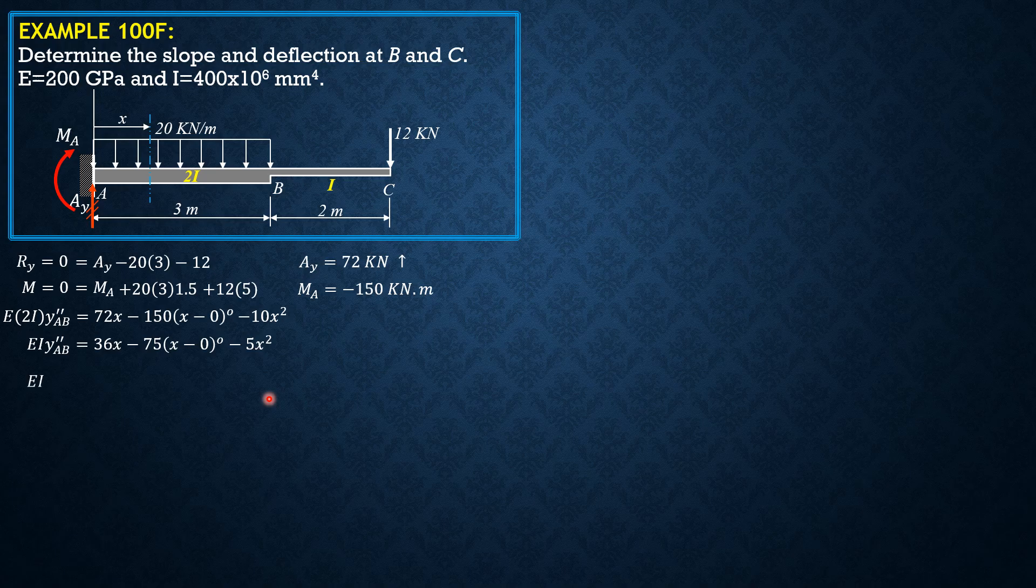So integrating once, EI Y prime AB equals 18X squared minus 75X, just 75X to the 1 or 75X, then minus 5 thirds X cubed. There is no C sub 1 because when X is zero, the slope at the origin is zero. So there is no C sub 1. There is also no C sub 2 because when X is zero, the deflection is zero.